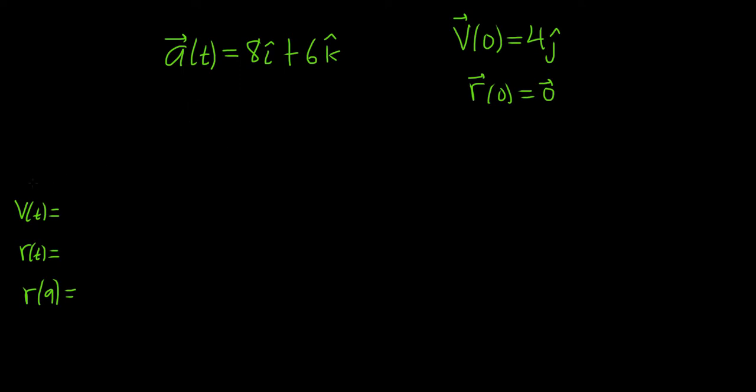In this problem, we have to find v of t, which is the velocity, r of t, which is the position, and evaluate r at t equals 9. Here, a is the acceleration, and it's given in the problem, along with these two conditions.